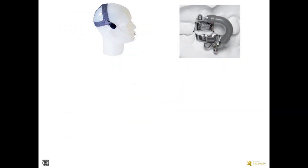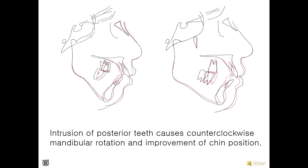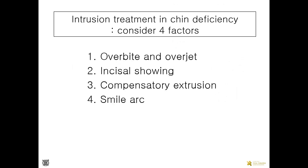Absolute intrusion had been one of the most difficult tooth movements, but after introducing mini implants, we can provide absolute intrusion effectively. Researchers showed that posterior intrusion can produce counterclockwise mandibular rotation, and as a result, increase of the overbite and forward movement of the chin were obtained. If you want to use intrusion in chin deficiency patients, please consider these four related factors.